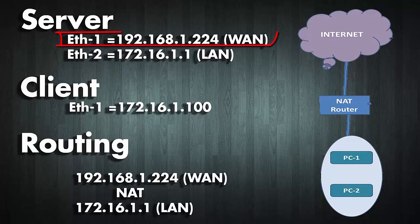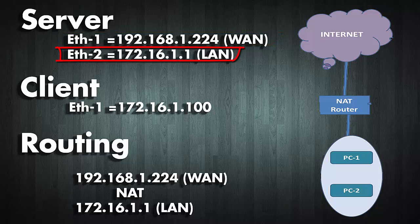Ethernet 1 IP is 192.168.1.224 — this is the WAN IP from the ISP. Ethernet 2 is the Local IP, 172.16.1.1 — this is the LAN IP for the client machines.